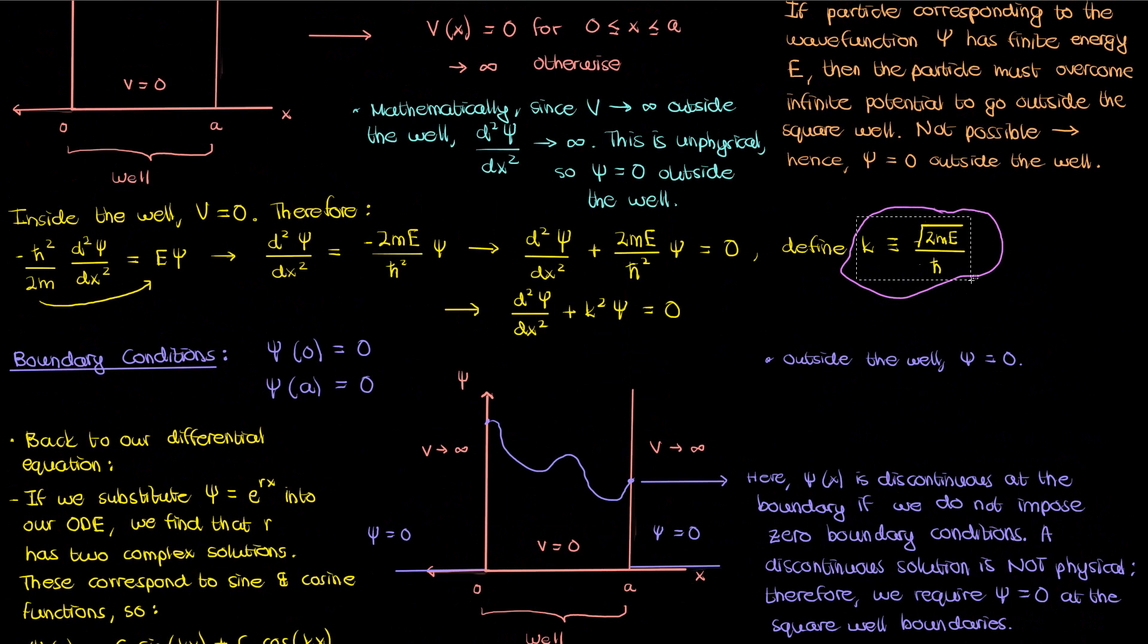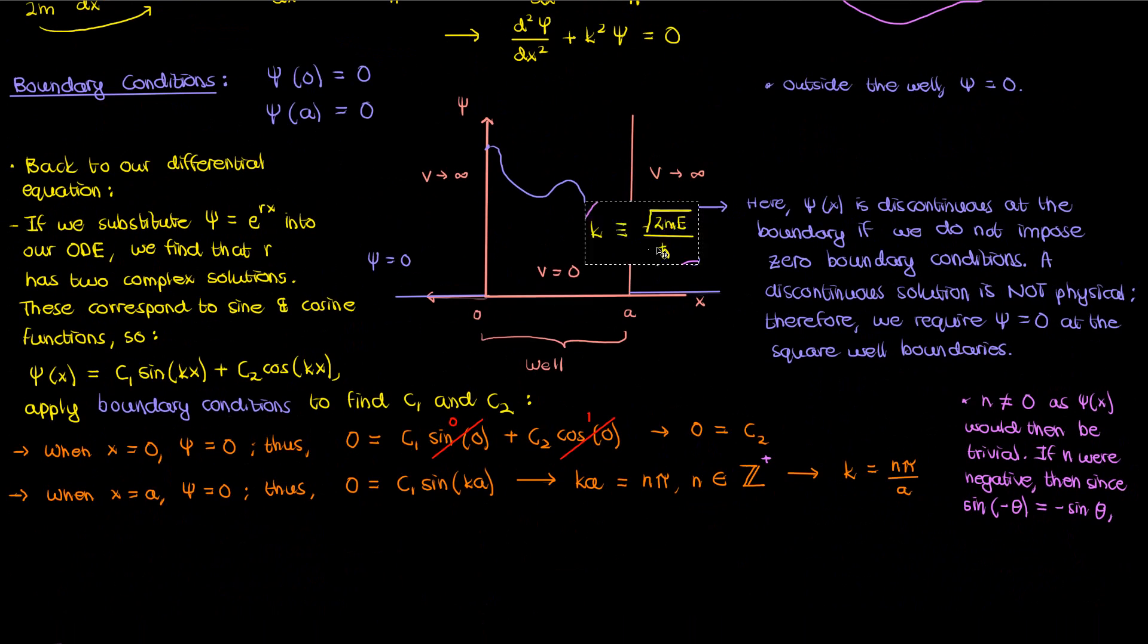Let's now go back to the definition of k for a moment. Remember that k is the square root of 2mE over h-bar which I'm gonna copy paste down here. In our other equation for k, k equals n pi over a. a is a fixed number that depends on the size of the well but n could be any integer. And since n can take on multiple values, it's reasonable to say that k could also take on multiple values. So what we'll do is index k by the integer n.